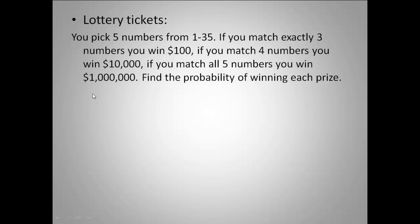We're going to start with matching exactly three numbers. The idea for finding the probability is how many ways do I win divided by the total ways. To get the total, I have 35 numbers to pick from and I need to pick five of them. With the lottery, the order doesn't matter, so it's a combination. I need to do 35C5, and when I do that, I get 324,632. That's the total number of ways I could pick my tickets.